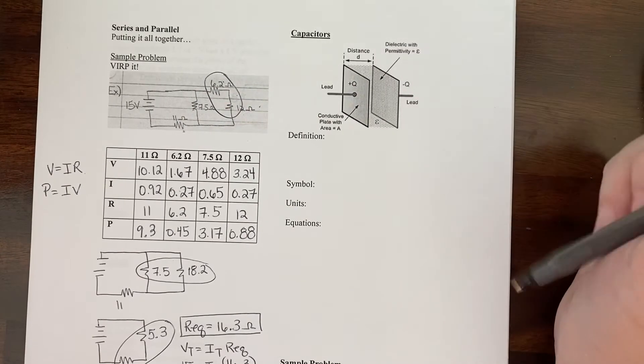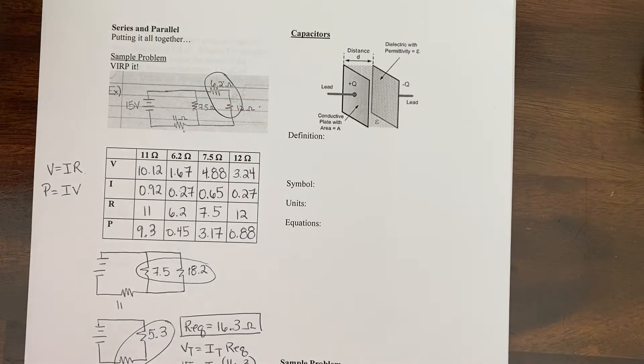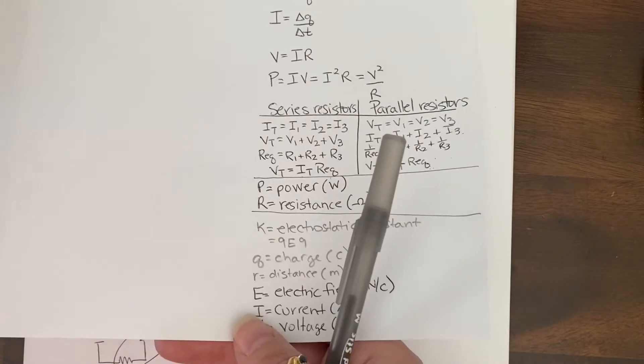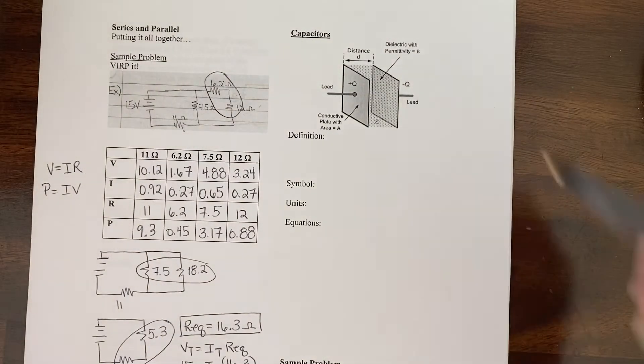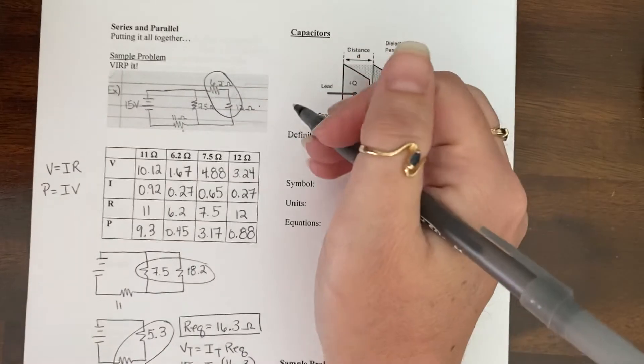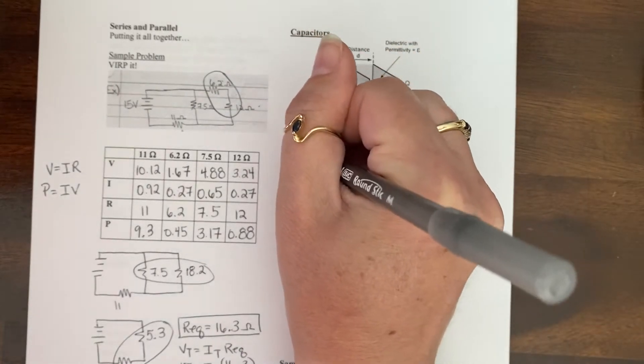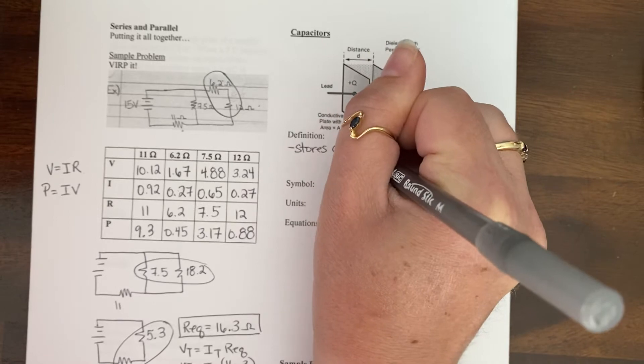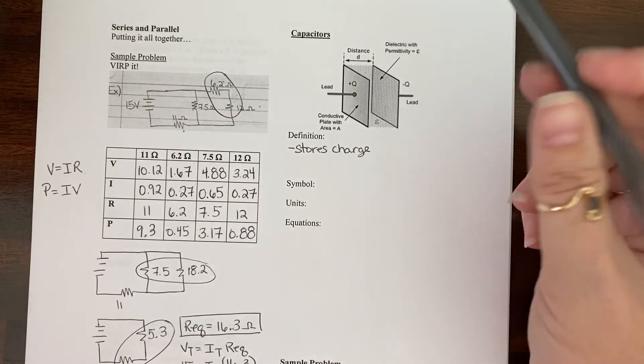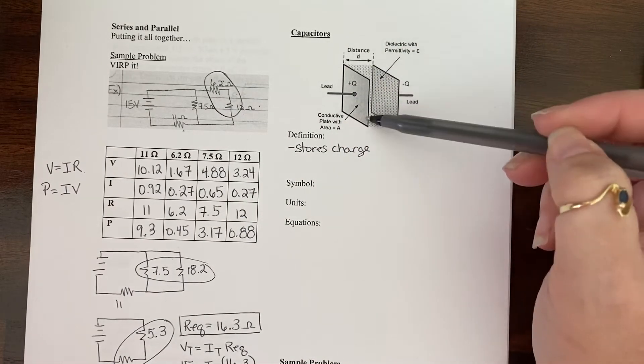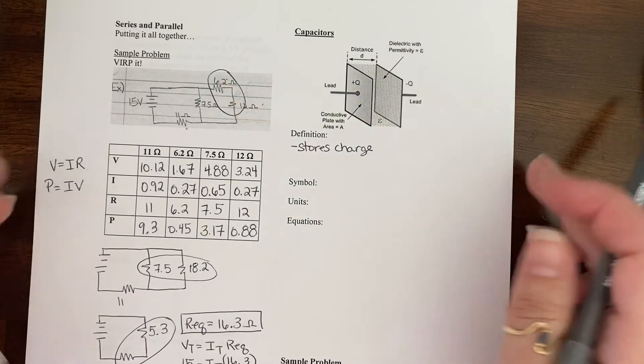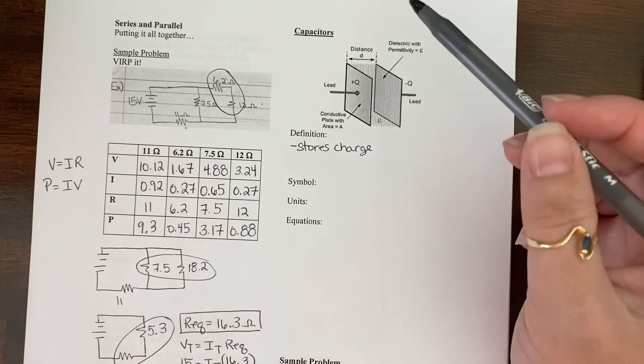All right, so what we're doing today is we're talking about capacitors. Now, you did a lab the other day with capacitors, and what capacitors are is something that stores charge. So before we get too into this, you'll definitely need your calculator today and also your green sheet, which again, mine is a white sheet. So what a capacitor is is something that stores charge. And the way that it stores charge is that there are these two parallel plates, and they're separated by this distance, D.